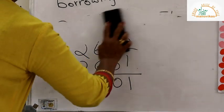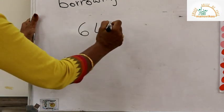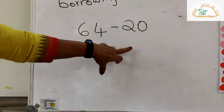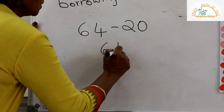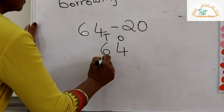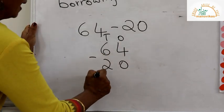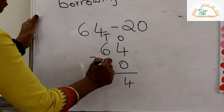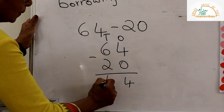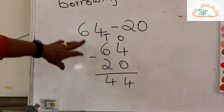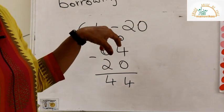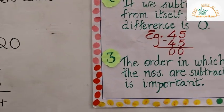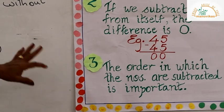Let's do a simpler example: 64 minus 20. Which is the bigger number — 64 or 20? 64 is the bigger number. So we put 64 in the ones and tens place, take 20 below and minus. 4 minus 0 gives 4, and 6 minus 2 gives 4, so the answer is 44. The third property says the order in which numbers are subtracted is very important — we always subtract a smaller number from the bigger number.